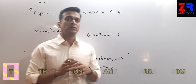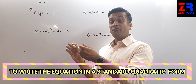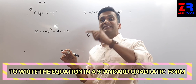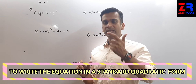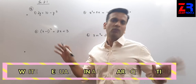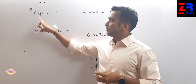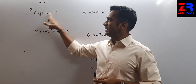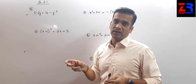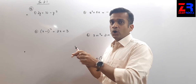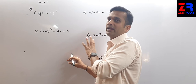The next question asks us to write the following equations in the form ax² + bx + c = 0 and find the values of a, b, and c. This is also a simple question. Looking at question number 1: 2y = 10 minus y². The terms are not arranged properly. As I mentioned, take all the terms on the left-hand side and keep 0 on the right-hand side.